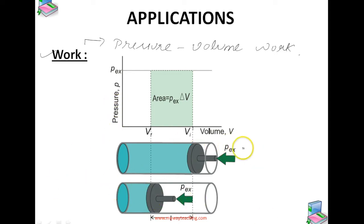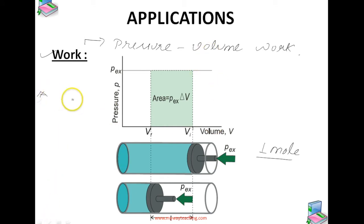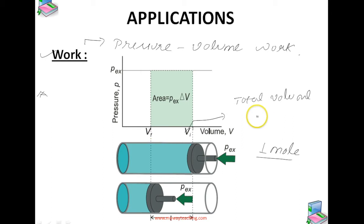Consider one mole of an ideal gas fitted with a frictionless piston. The total volume of the gas is V_i, and the pressure of the gas inside is P.